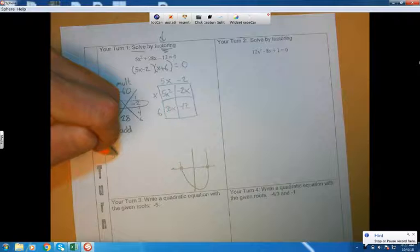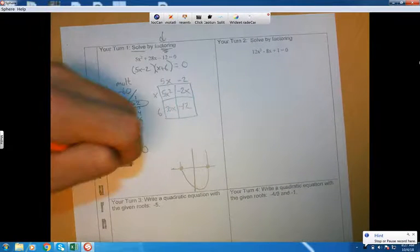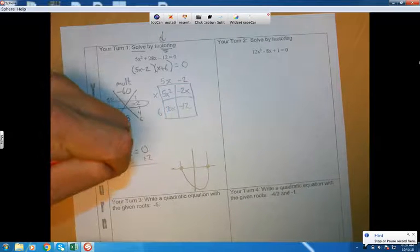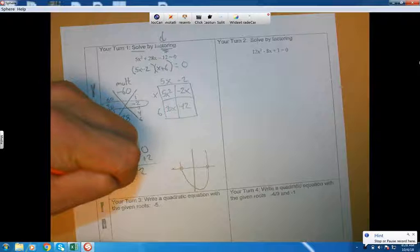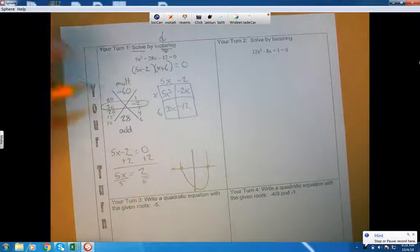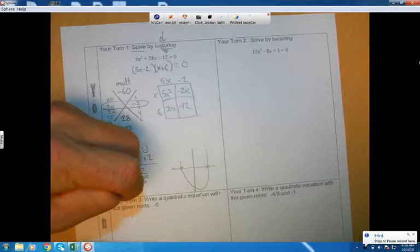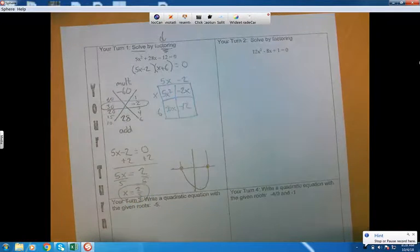So I want to know when this factor hits the ground. So 5x minus 2. When does that factor hit the ground? Let's find out. Plus 2, plus 2. 5x equals 2. Divided by 5. And this parabola hits the ground at 2 fifths.